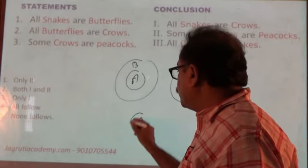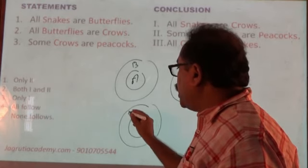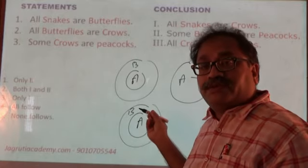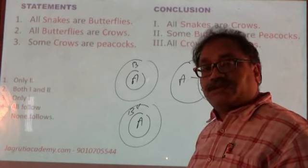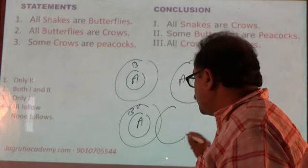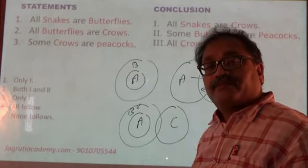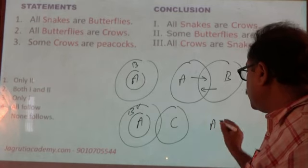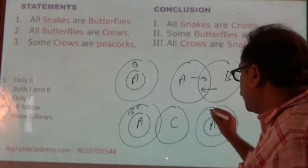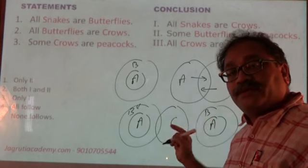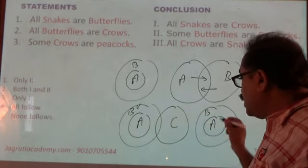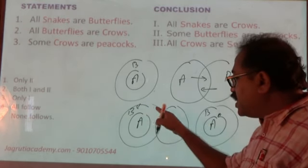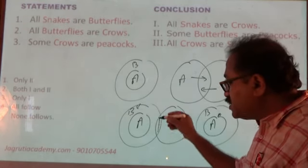When all A's are B's and there are two statements, and some B's are C's — some B's are C's — I draw the diagram this way. Second case: when all A's are B's, this is A and this is B, all A's are B's. Next, some A's are C's. What was in the first case? Some B's are C's. So I made an intersection of B.